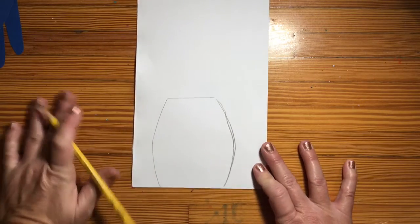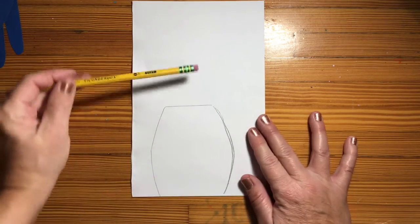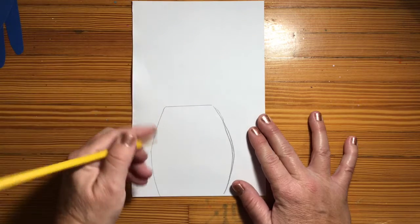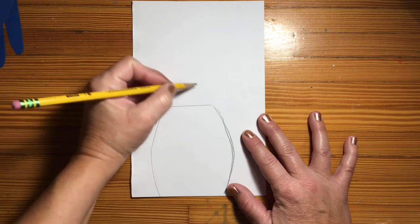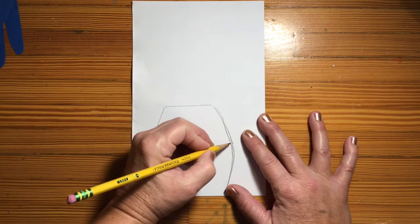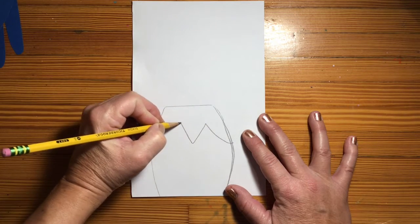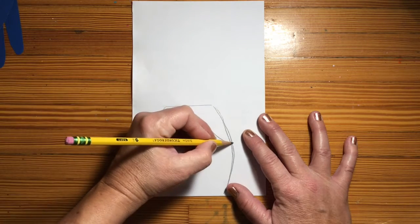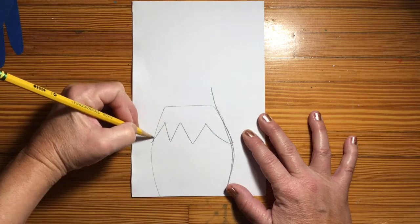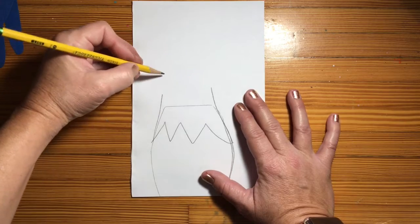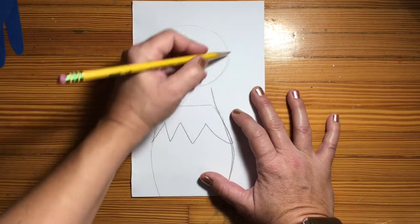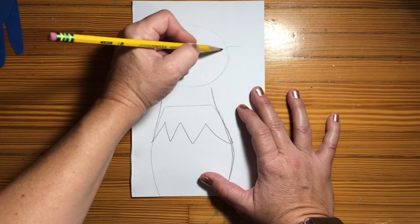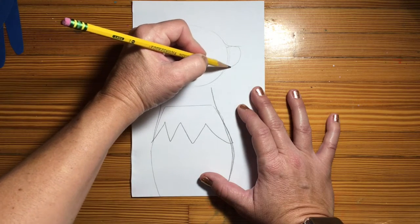Now we want our eagle to have his head facing to the side. So this is kind of where the neck and the head starts, but we want feathers to overlap so use a zigzag line. I'm going to go up, up. Now let's lightly draw a circle.